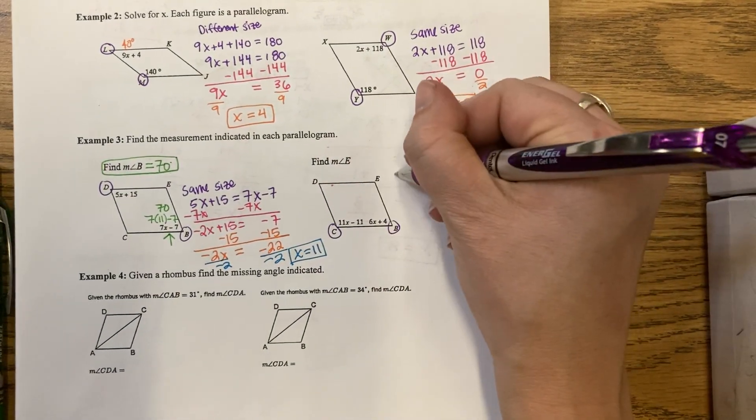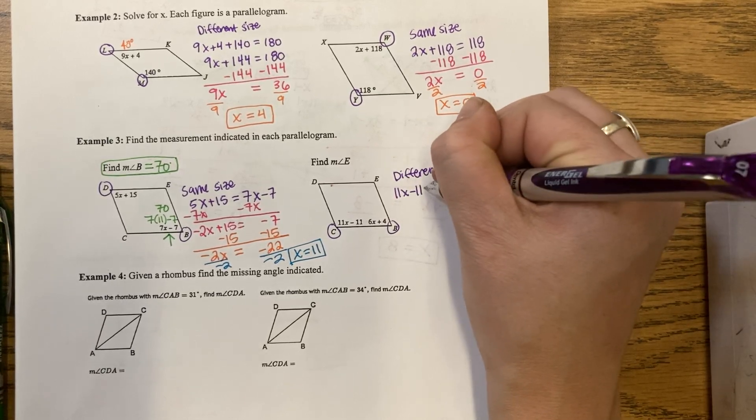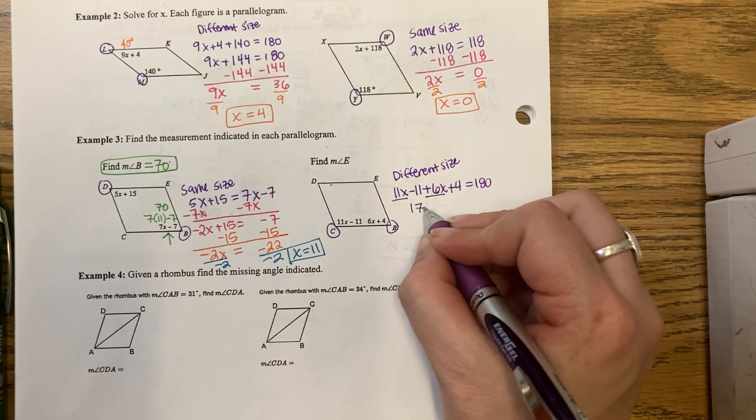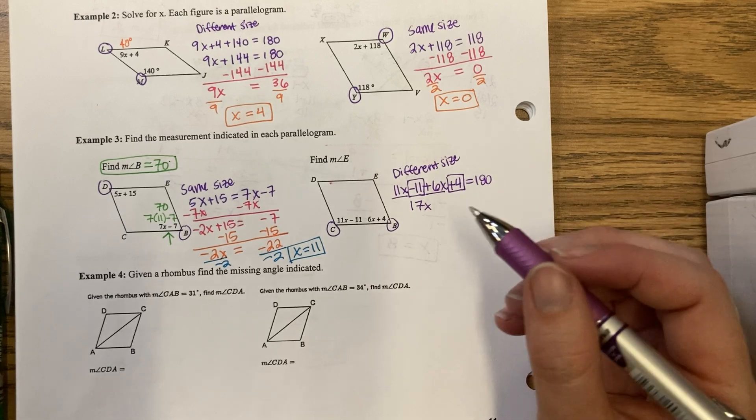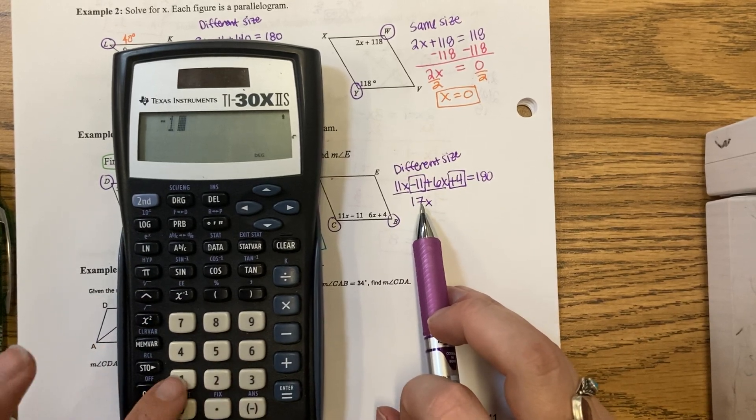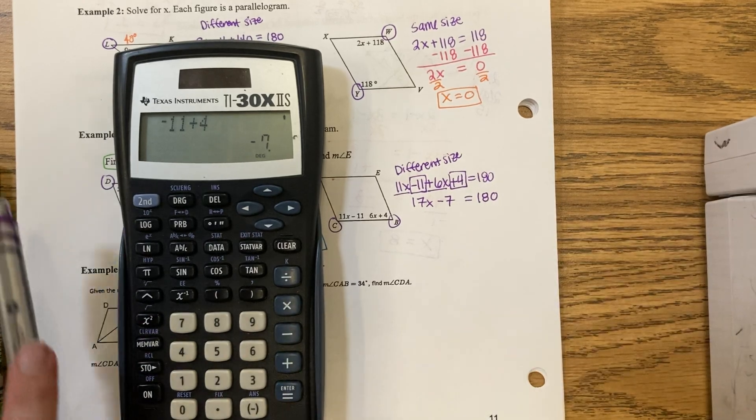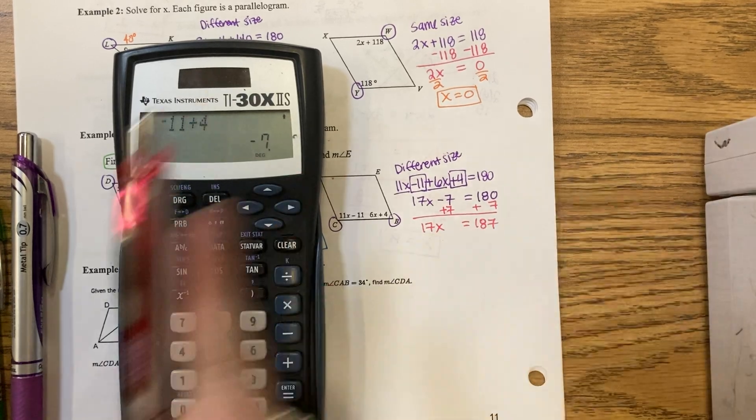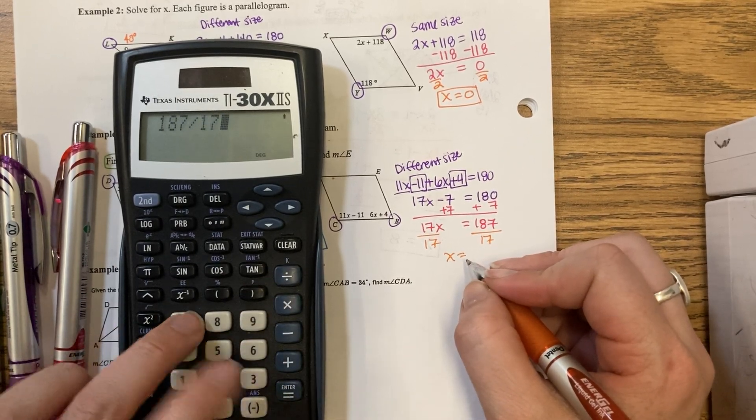I'm given C and B. They are different sizes. So I'm going to say 11x minus 11 plus 6x plus 4 is 180. Together, 11 plus 6 is 17. Negative 11 plus 4 is minus 7. Then, once I start moving to the other side, that's when I switch my signs. And then divide by the 17. 187 divided by 17 is 11.